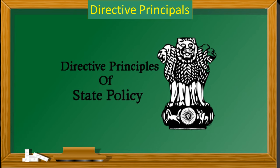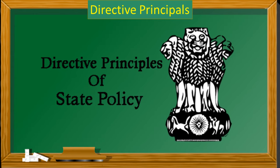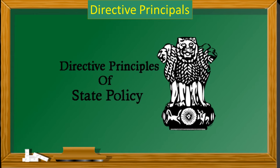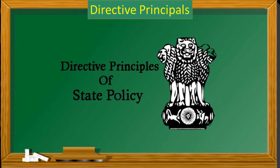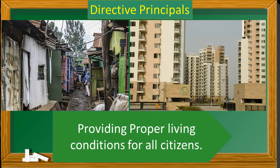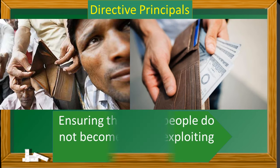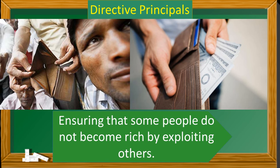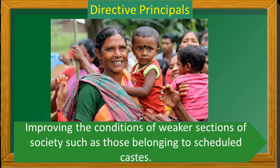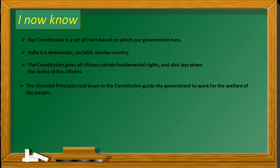Directive principles: Our Constitution lays down certain guidelines for the government to follow for the welfare of the people. Some of the important guidelines are: providing proper living conditions for all citizens, providing work for everyone, and ensuring that some people do not become rich by exploiting others.